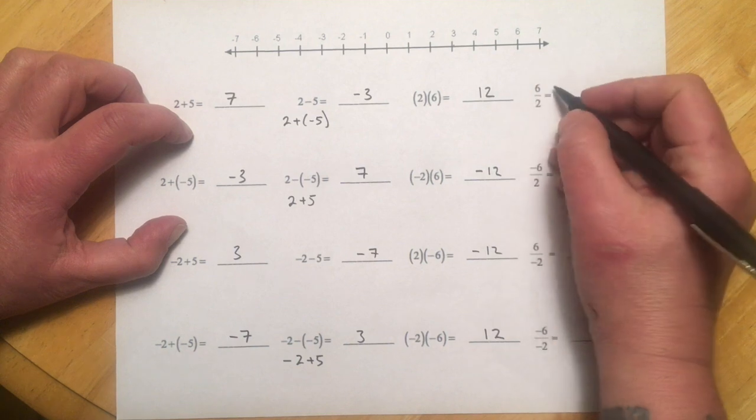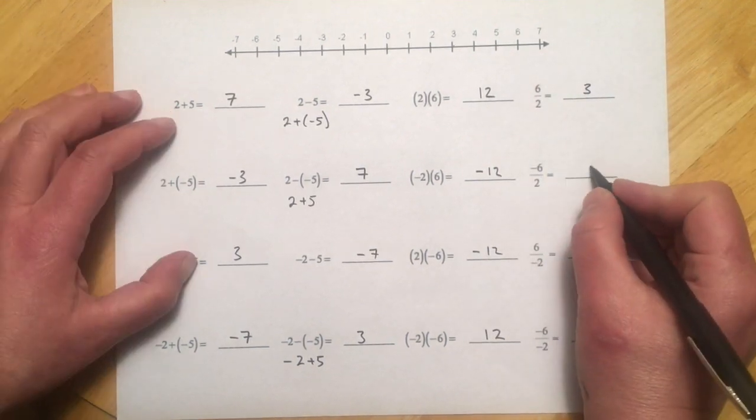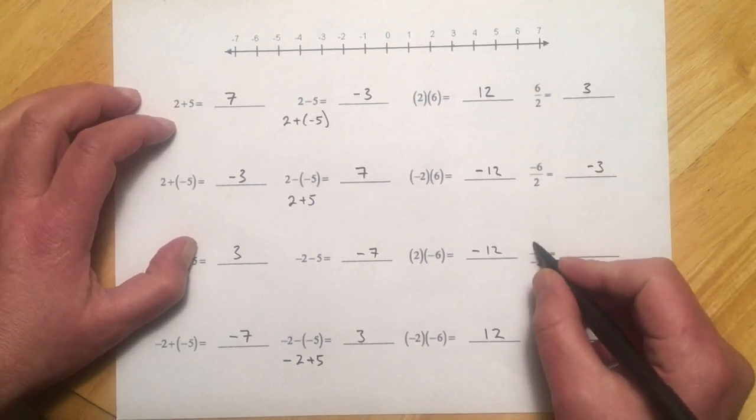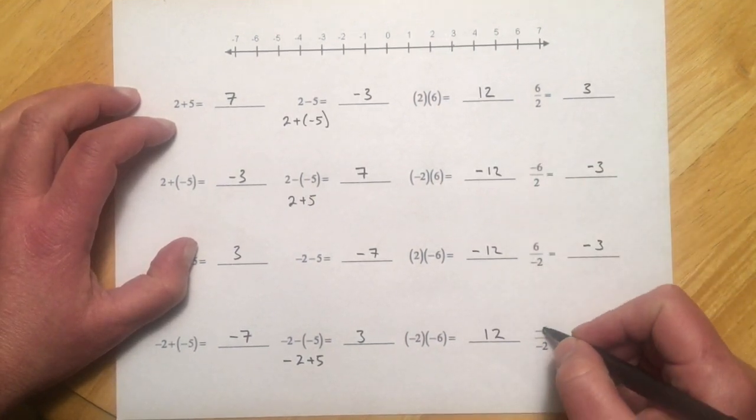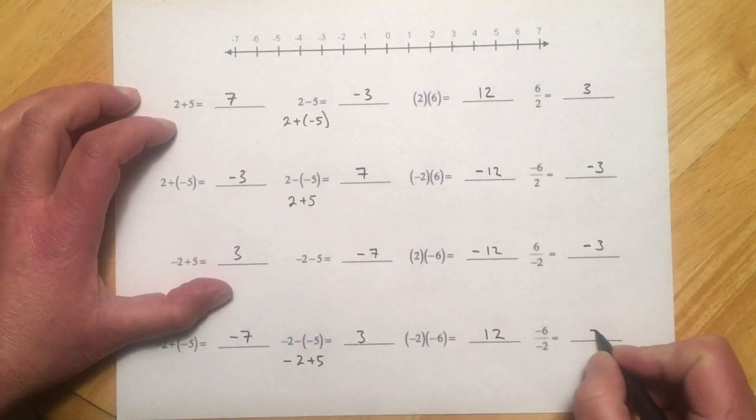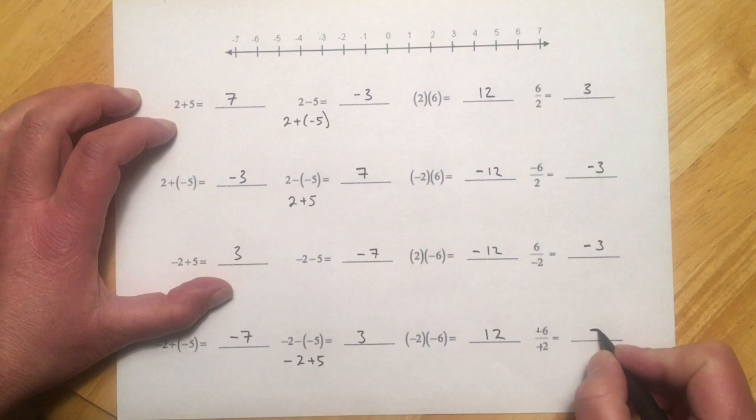And then just to run down the division ones, 6 over 2 is 3, negative 6 over 2 is negative 3, 6 over negative 2, still negative 3, because one negative sign, double negative here would be, I'm sorry, positive, so that makes this plus 3.